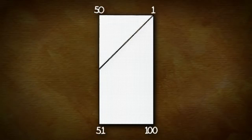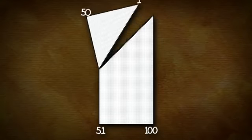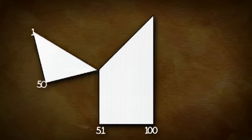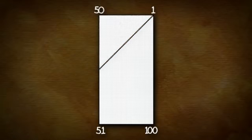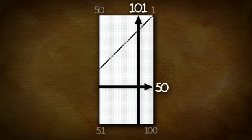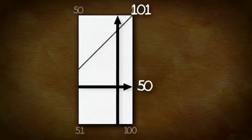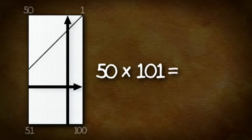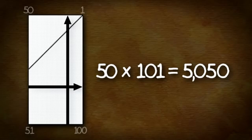Moving around this piece hasn't changed the total number of squares. We simply worked to rearrange it into a form we could more easily deal with. The figure is now a rectangle that has 50 squares across, and 101 squares running up the height. Multiplying 50 by 101 gives us the total number of squares, 5050.